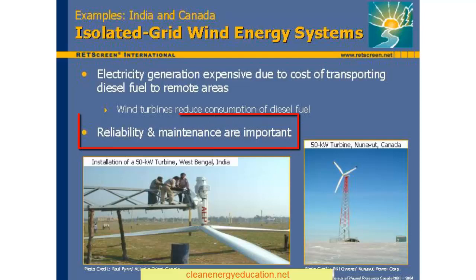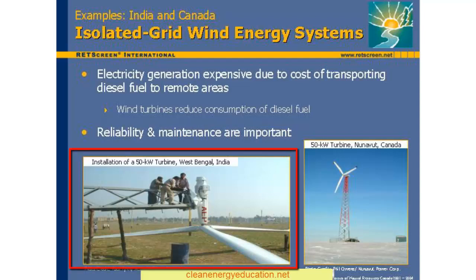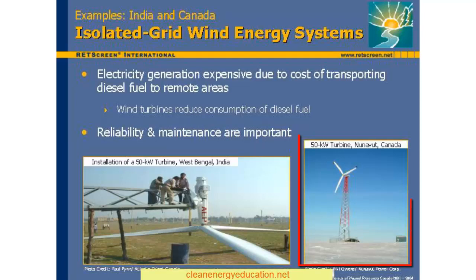Sending parts and specialized labor to the community will be expensive. On the other hand, the operator of the isolated grid must have a realistic plan in place for conducting the required regular inspections and maintenance. Otherwise, even the most robust and reliable turbine will eventually fail. The photos on this slide show two very different isolated grid applications of the same model of turbine, a 50 kilowatt machine. On the left, a crew is installing the turbine as part of a small wind park for the isolated grid of Sagar Island in West Bengal, India. On the right, the turbine is providing power to the very remote community of Rankin Inlet in Nunavut Territory in the far north of Canada.